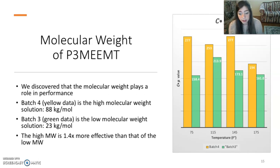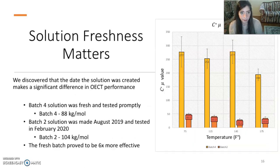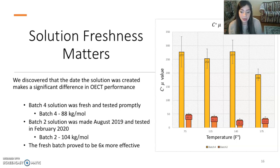We discovered that the molecular weight of a polymer plays a big role in the performance of an OECT. Our high molecular weight batch outperformed our low molecular weight batch — the high molecular weight batch was 1.4 times more effective than the low molecular weight. We also discovered that the freshness of the solution plays a significant role in OECT performance; the batch that was created and tested promptly was six times more effective than the aged solution.